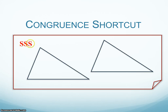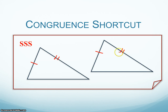SSS is the abbreviation we're going to use. So if I have three sides congruent to my triangle, then I know that these two triangles must be congruent. I don't even need to know about the angles — just as long as I know that this side is congruent to this side, and this side corresponds to this one and is congruent, and this side here is congruent to this side here. So then I have three sides of one triangle congruent to three sides of the other triangle, and I know these two triangles are congruent.